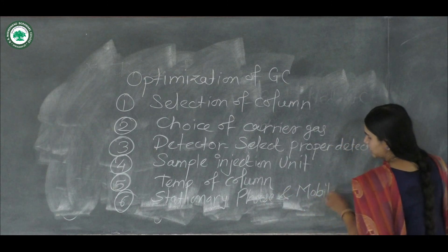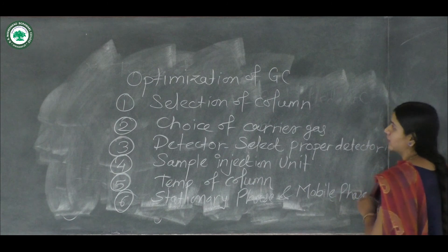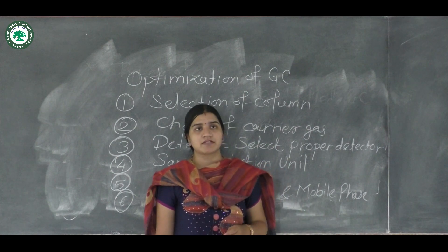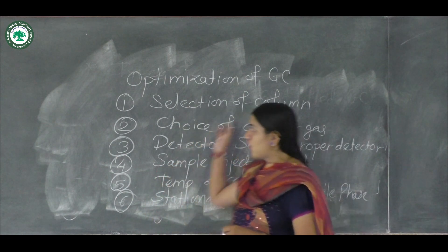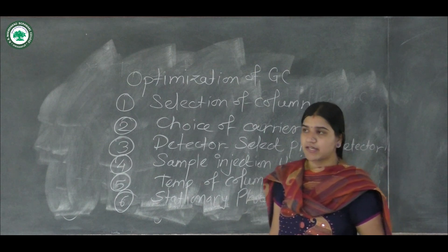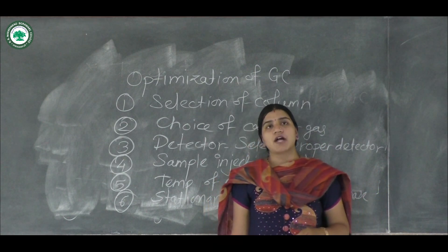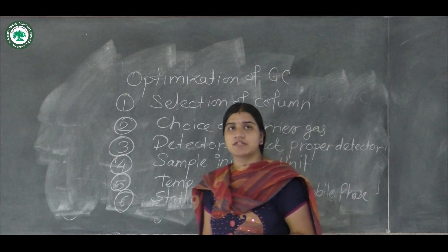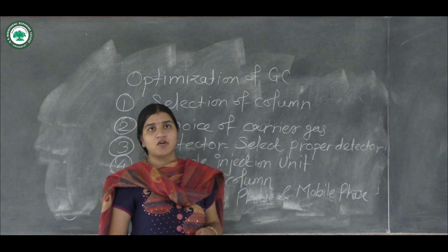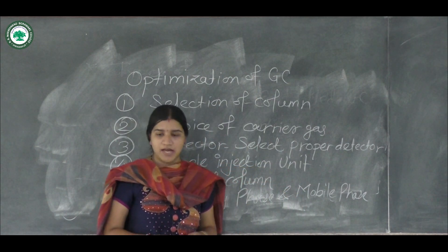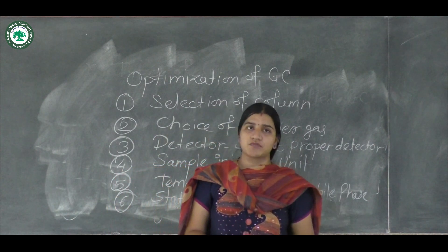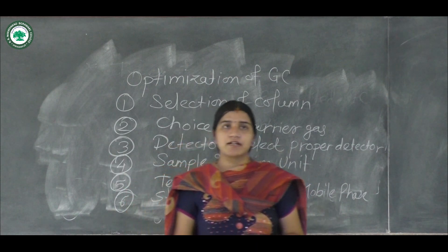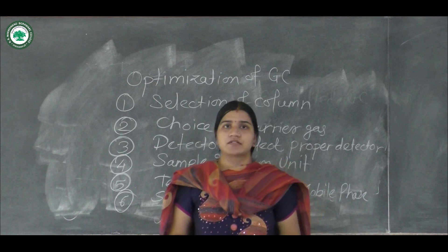You also need to select the stationary phase as well as the mobile phase, as the choice of both plays an important role. In summary, for optimization you must consider: choice of carrier gas, proper choice of column, selection of sample injection system, and selection of stationary and mobile phases. After selecting all these, you can start with the actual experimental procedure. This completes the syllabus regarding the gas chromatography chapter. Thank you.